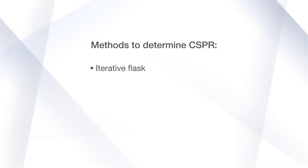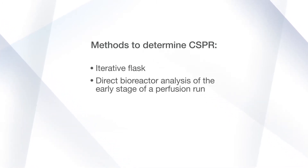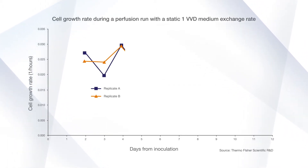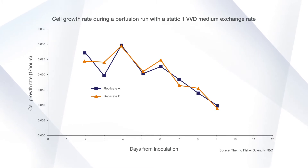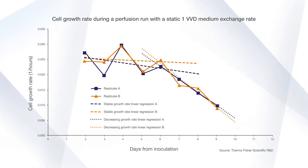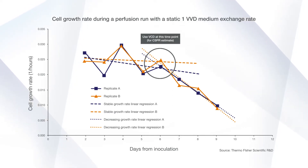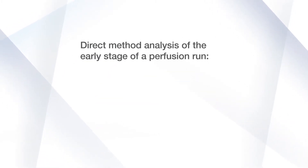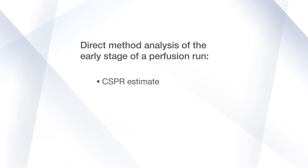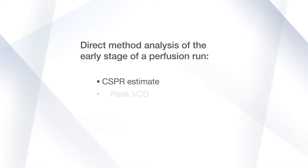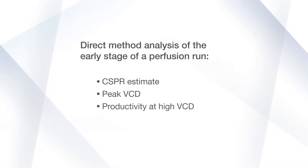There are different methods to determine CSPR, such as iterative flask methods or a direct bioreactor method analysis of the early stage of a perfusion run, as shown in this graph. Here, the cell behavior is monitored for a sudden drop in growth rate, identifying the possible limit of medium exchange necessary to support log growth of the cell culture at the VCD where the drop occurs. This direct method analysis may also shed light on expected cell line behavior such as peak VCD and productivity at high VCD.